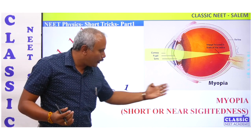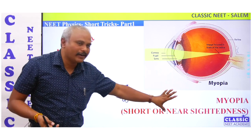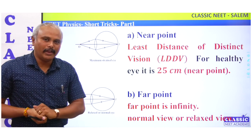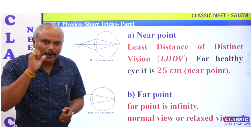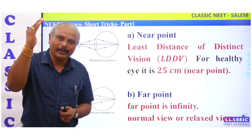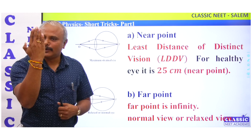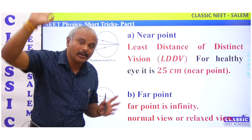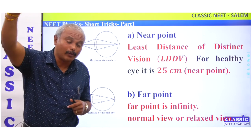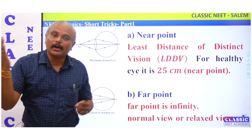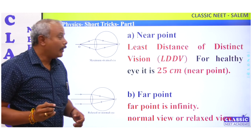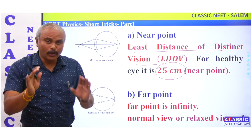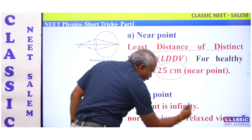Now, in Ray Optics, myopia is talking about short-sightedness or near-sightedness. We are going to talk about two points of our eye: one is the near point and one is the far point. The least distance of distinct vision is 25 cm — this is a normal eye's near point. A normal eye's far point is infinite.